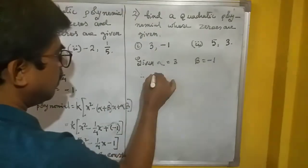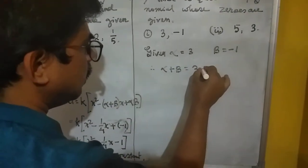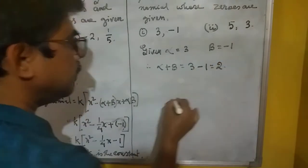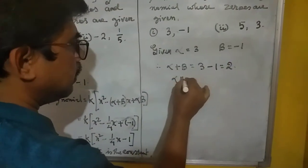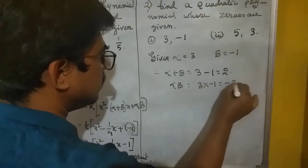So therefore, alpha plus beta equal to 3 plus minus 1 is minus 1 only, will be 2. And then alpha into beta will be 3 into minus 1, will be minus 3.